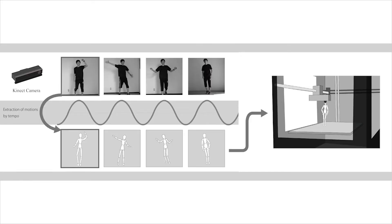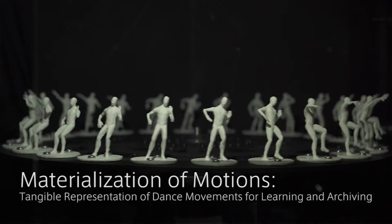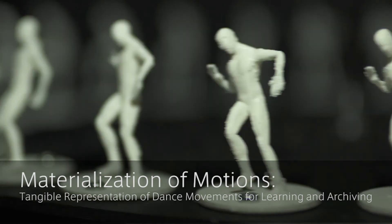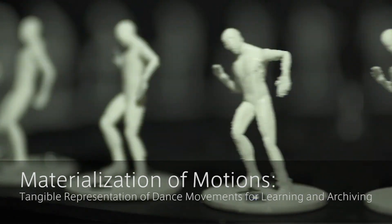In this study, we acquire 2D information of the performer's dance motions using the Kinect sensor, and save it as a motion file. Appropriate motions are extracted from the file at every constant tempo by analyzing the tempo of the music used for dancing. We believe that the proposed method of this study expands the archived methodology for dance choreography.